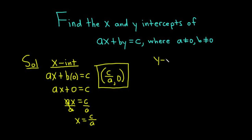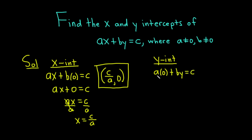Let's go ahead and find the y-intercept. Again, to find any intercept, you set the other variable equal to zero. So to find the y-intercept, we're going to set x equal to zero. I'm going to write down this equation one more time, but I'm going to put a zero where the x is. So it's a times zero plus by, and that's equal to c. A times zero is zero, so we get zero plus by equals c. Zero plus by is just by, so we get by equals c.